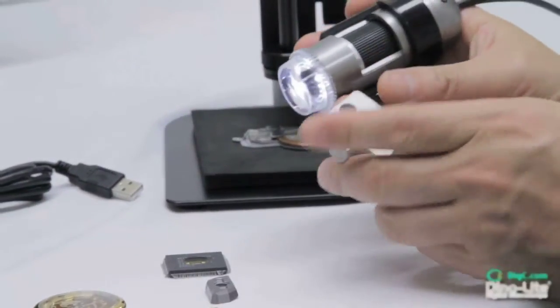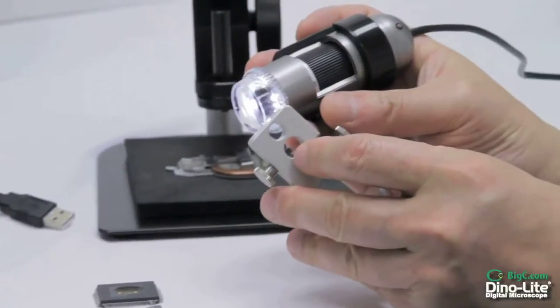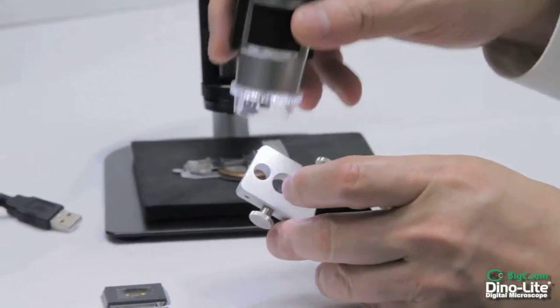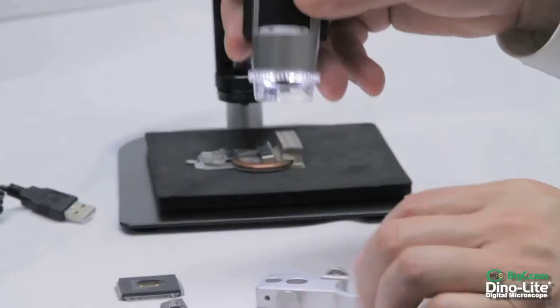This model has a shortened nozzle allowing the user to achieve 200 times magnification at a 6 millimeter working distance without touching the object.